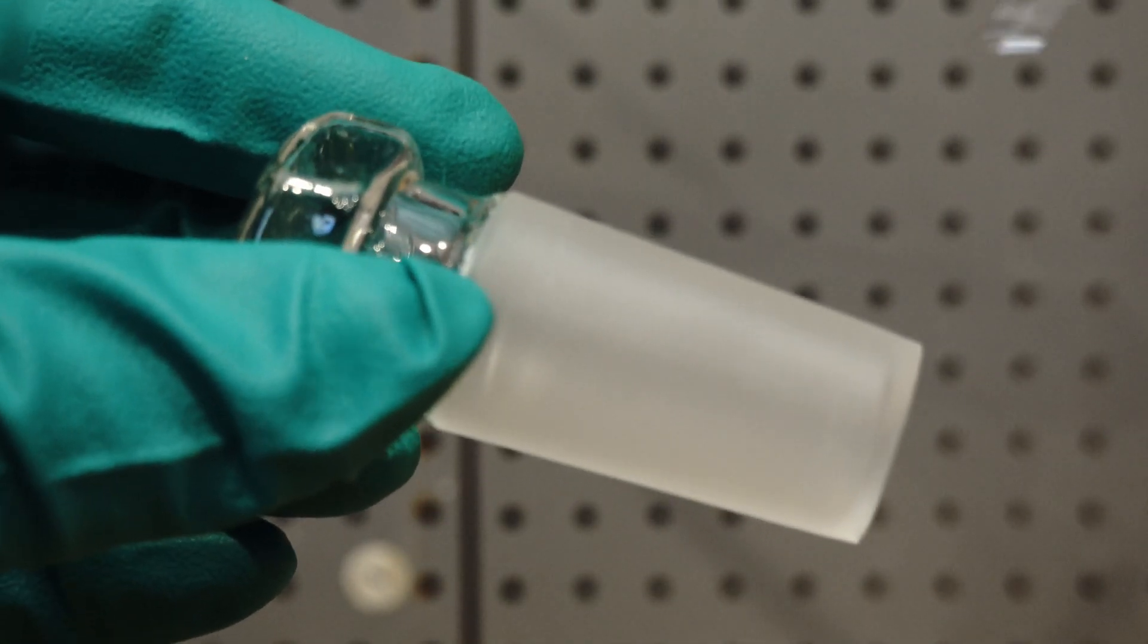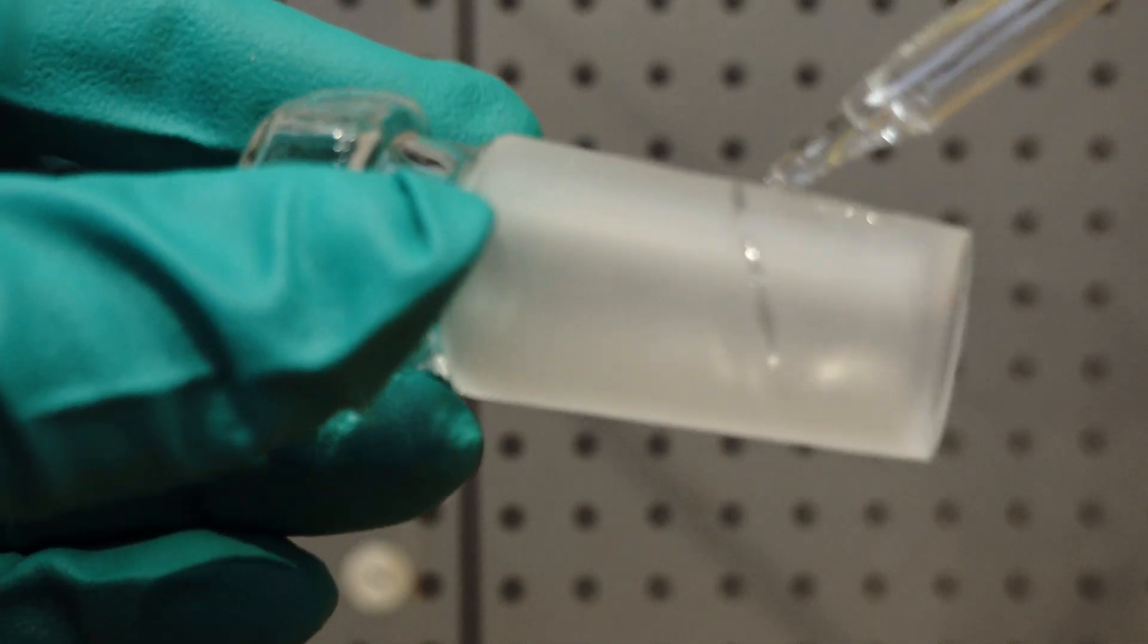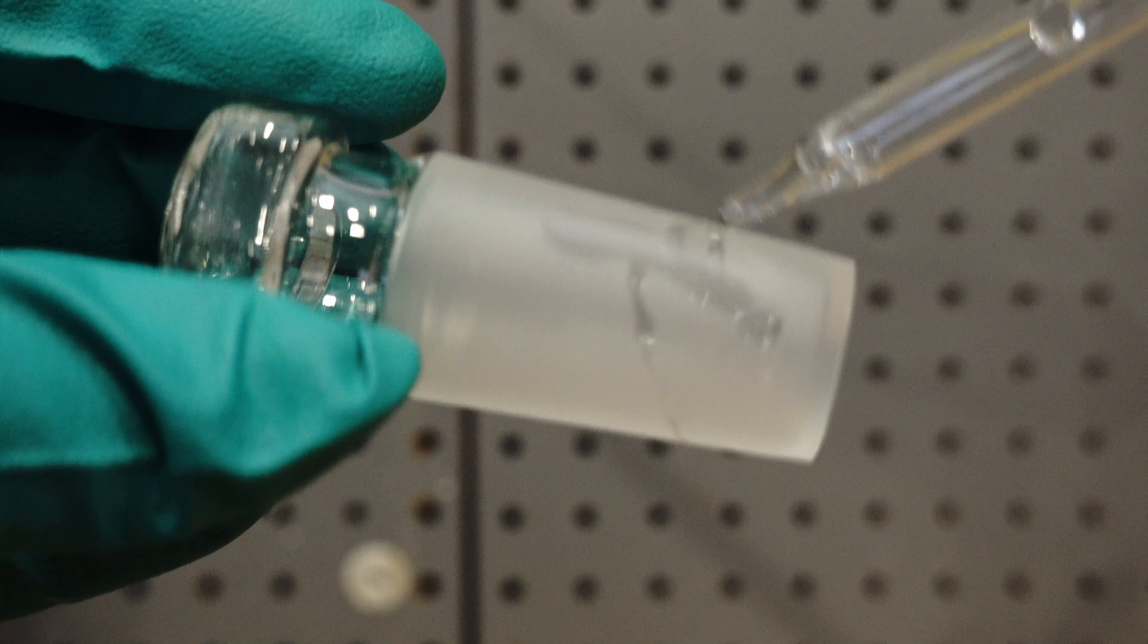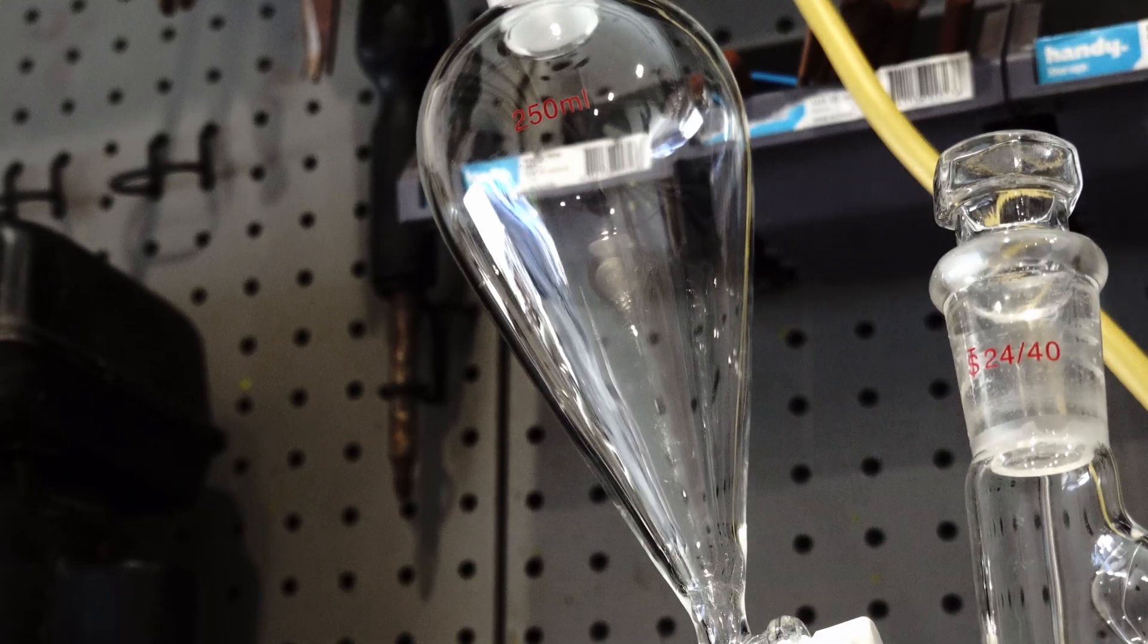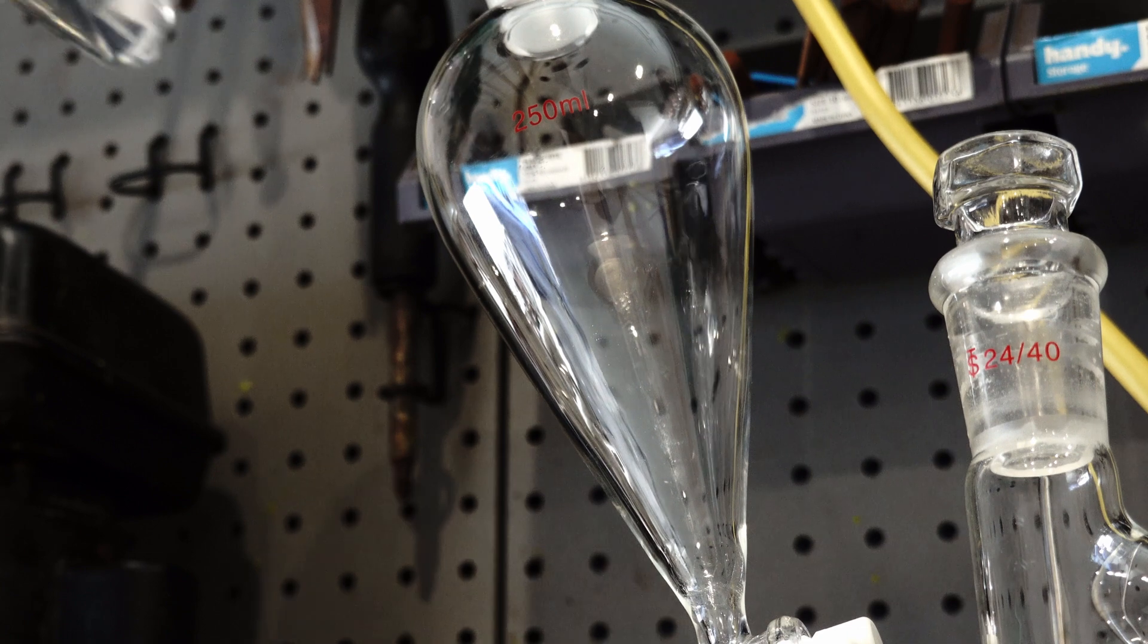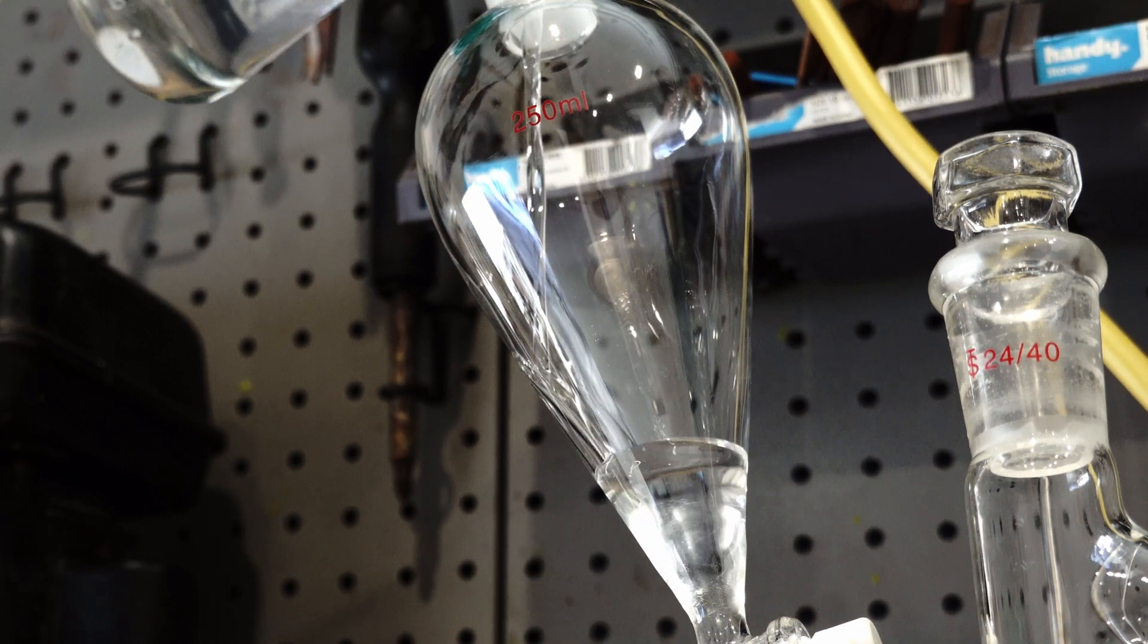An important step when doing this reaction is to lubricate all joints with sulphuric acid as normal grease would react with the produced Bromine. I charge a 250ml separatory funnel with 67ml of concentrated sulphuric acid.